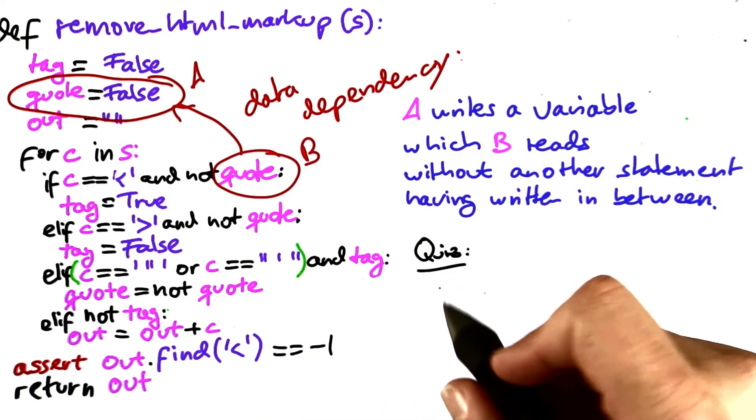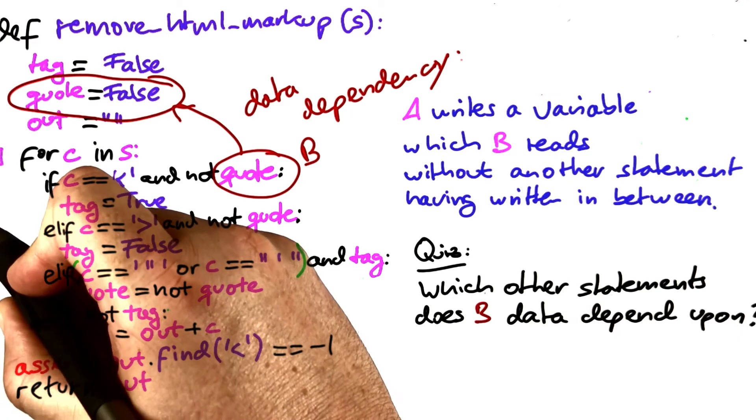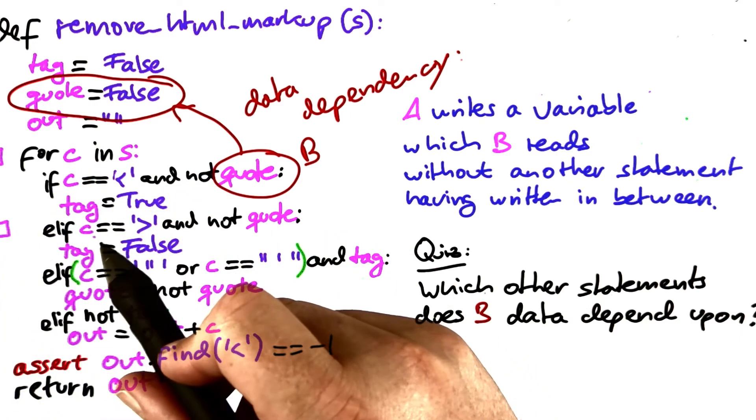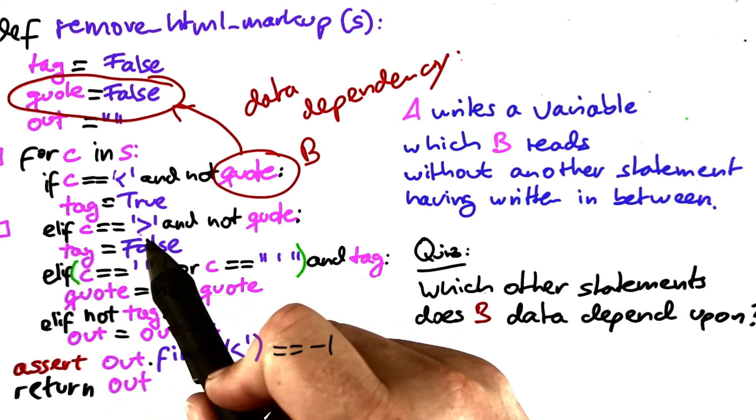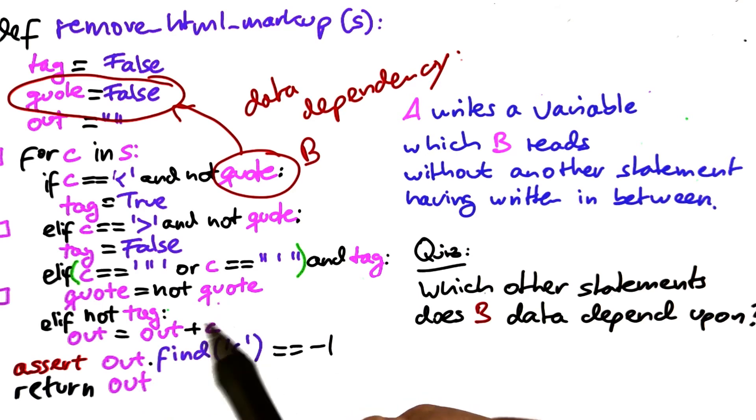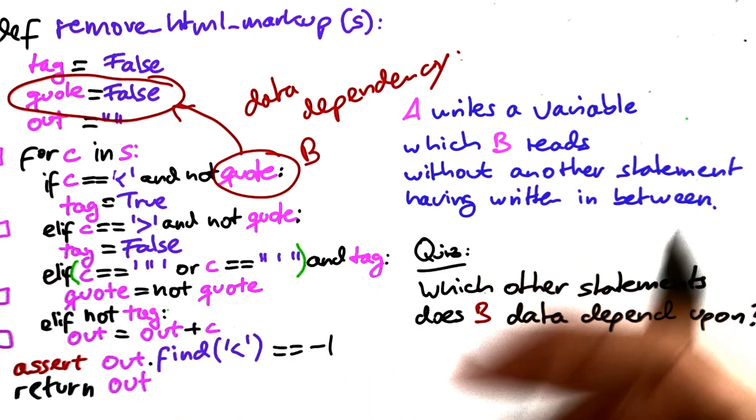Now, for a quiz. Which are the other statements that B data depends upon? Is this for C in S? Is this else if C equals the greater sign and not quote? Is this quote equals not quote? Or is this out equals out plus C? Check all that apply.